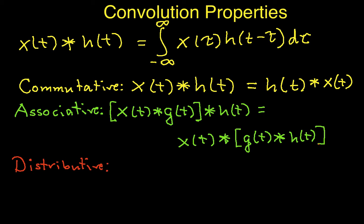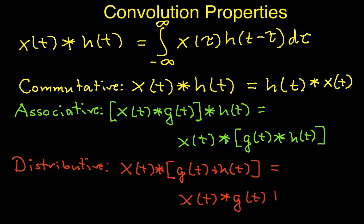So, if I have x of t convolved with the sum of g of t and h of t, this is equal to x of t convolved with g of t plus x of t convolved with h of t.